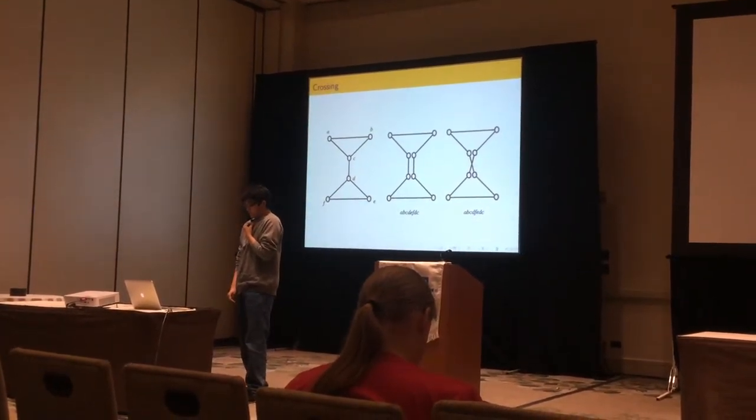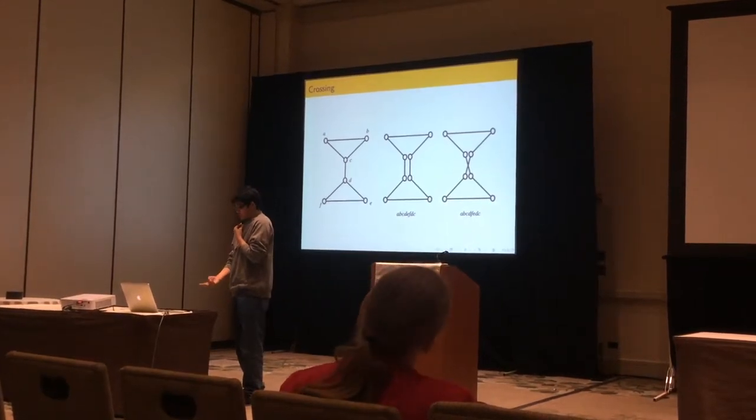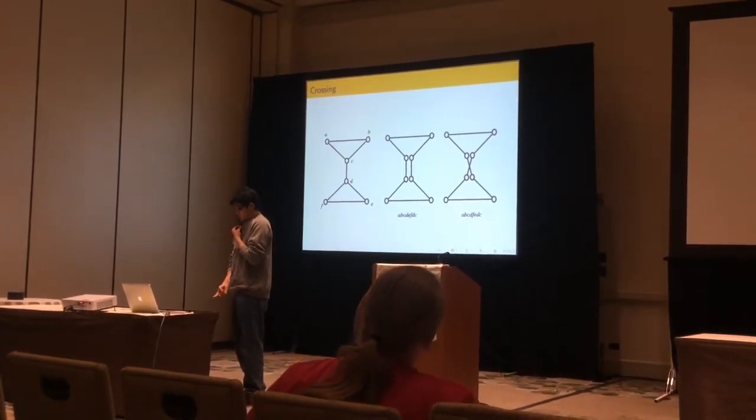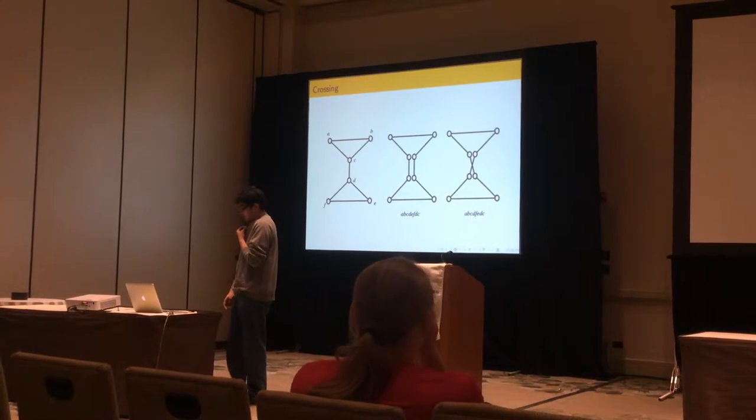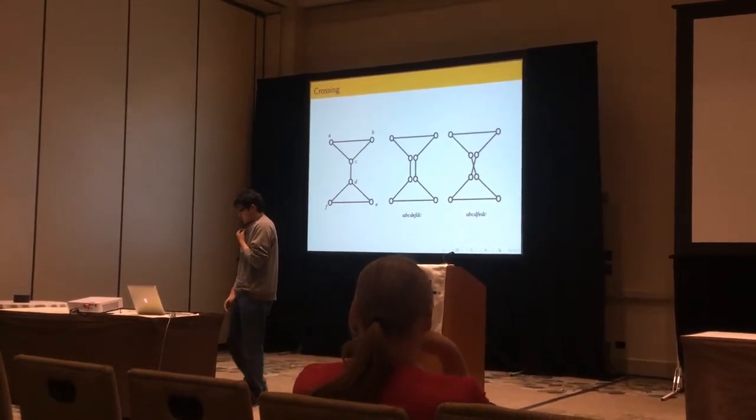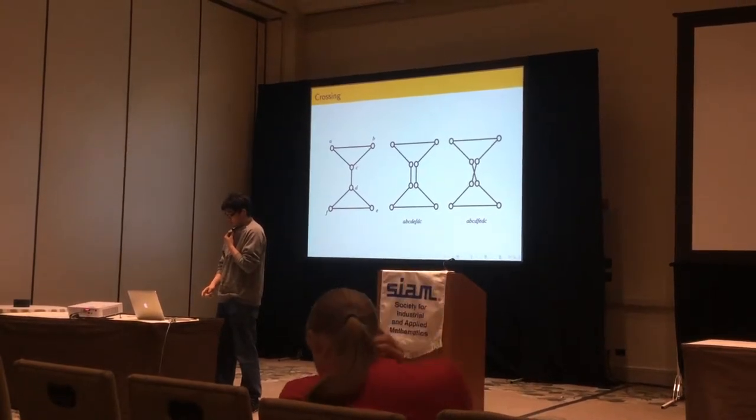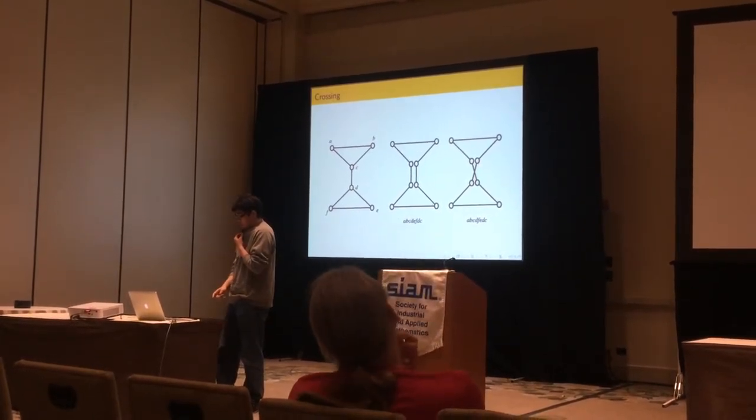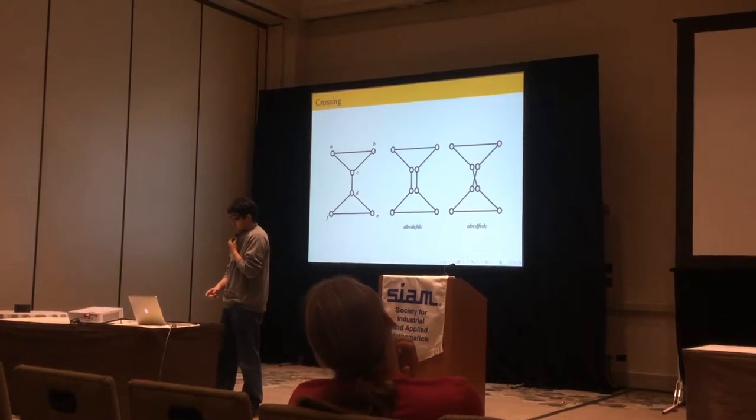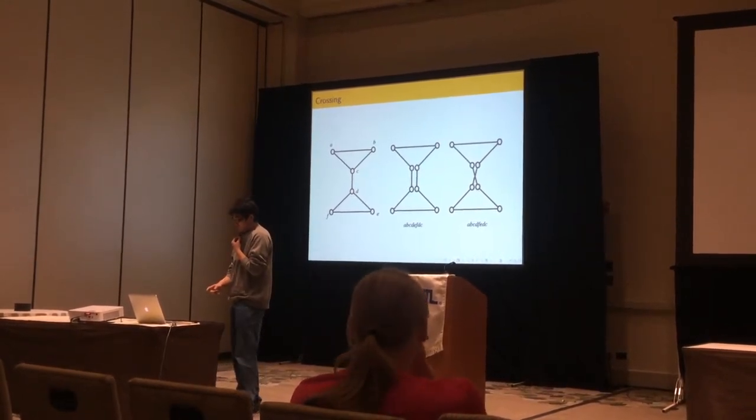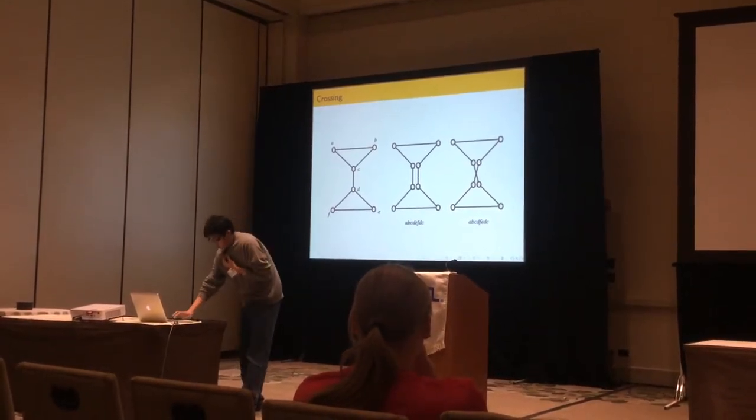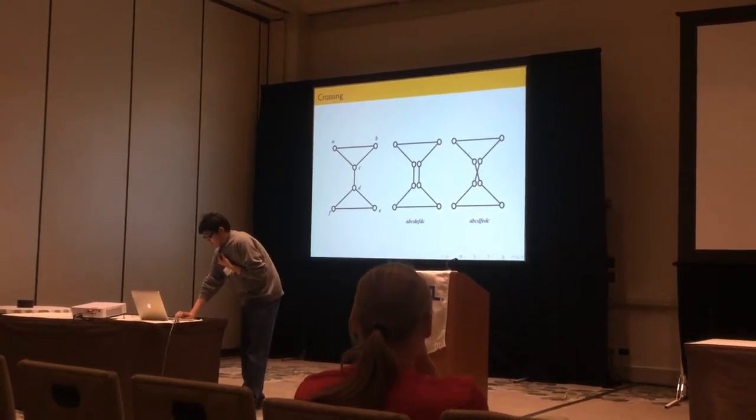So this will be an example where there are two polygons here. One is A, B, C, D, E, E, C, A, which is really simple. And the other one, the only thing that changes is if C connects to F and E connects to D. So it's A, B, C, F, E, D, C, A. So this one. But this one has a crossbar.